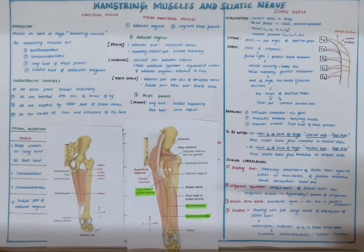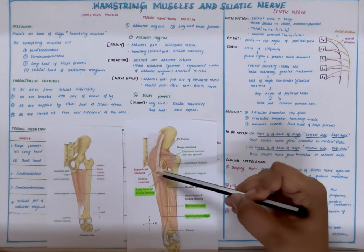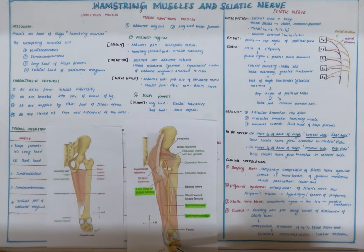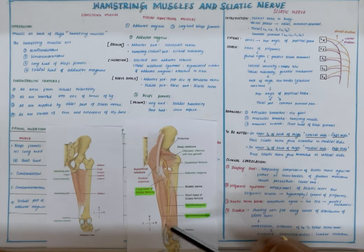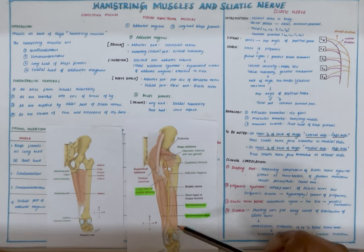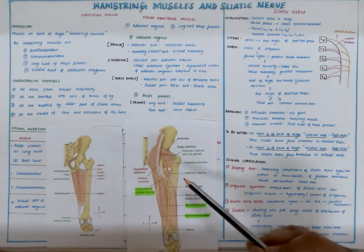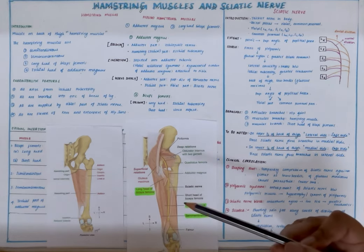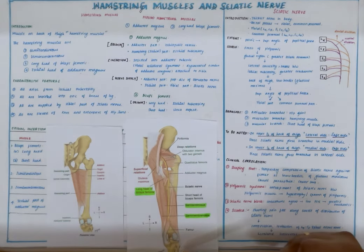Now let us take a look at the muscles. We have semitendinosus, which arises from the ischial tuberosity and gets inserted into the tibia in this region. Then we have semimembranosus, which arises from the ischial tuberosity and comes down to get inserted into the tibia. Then we have the biceps femoris muscle, which has two heads: the long head and the short head. The long head arises from the ischial tuberosity — that is why the long head is part of the hamstring group — and as it comes down, it gets inserted into the head of the fibula.